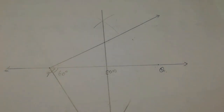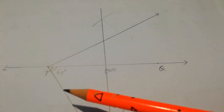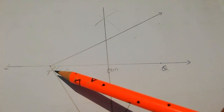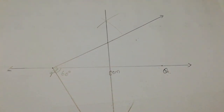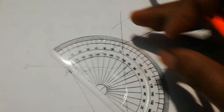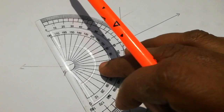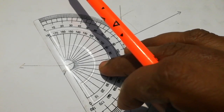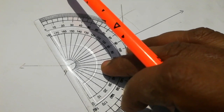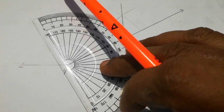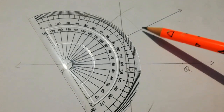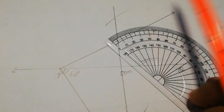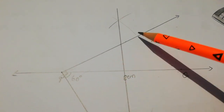Next, at point P, we draw a perpendicular line — one perpendicular using the protractor. Draw the line and mark 90 degrees. This line is perpendicular.